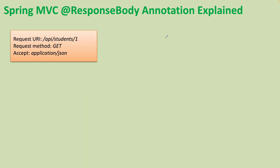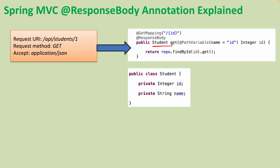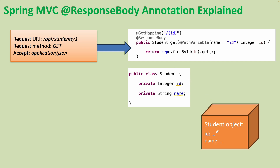Let me explain how the @ResponseBody annotation works. Suppose the client sends a request with a URI like this — the request method is GET and the accepted content type is application/json. This request is handled by a handler method in the Spring MVC controller class. That handler method is annotated with the @ResponseBody annotation and returns an object of type Student. The Student class has two fields: id and name.